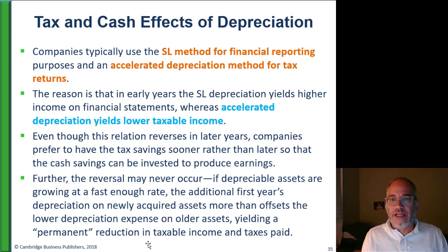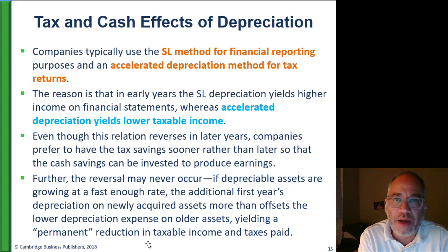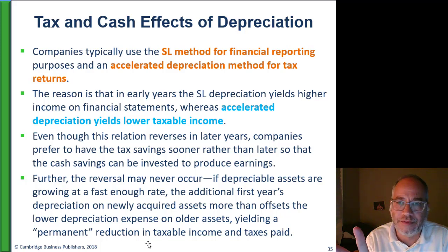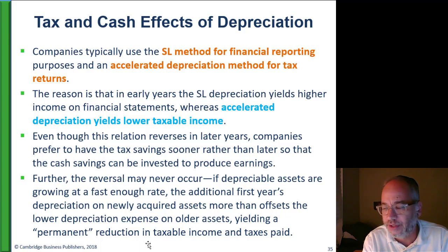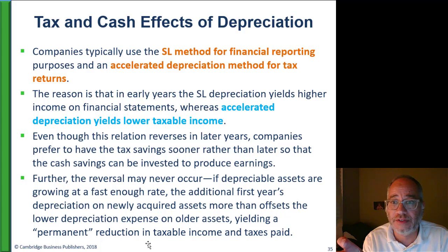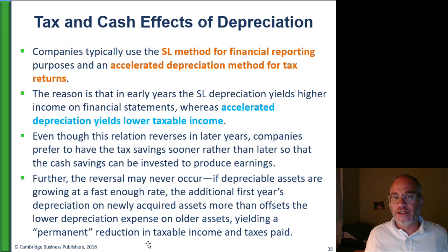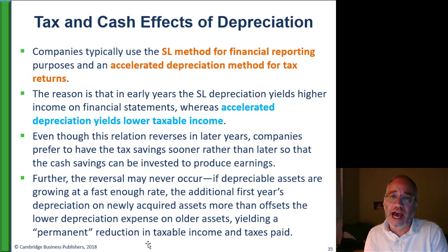This would reverse later on in the life of the asset. I want to point out a discrepancy from what we said before. When we were talking about inventory, we said that if you use LIFO on your taxes, then you have to use LIFO on your financial statements. The IRS doesn't have a rule like that for depreciation. The IRS says you can use accelerated cost recovery on your taxes but still use straight line on your financial statements. So you can use the best of both worlds, reporting less income on your taxes but more income on your financial statements.